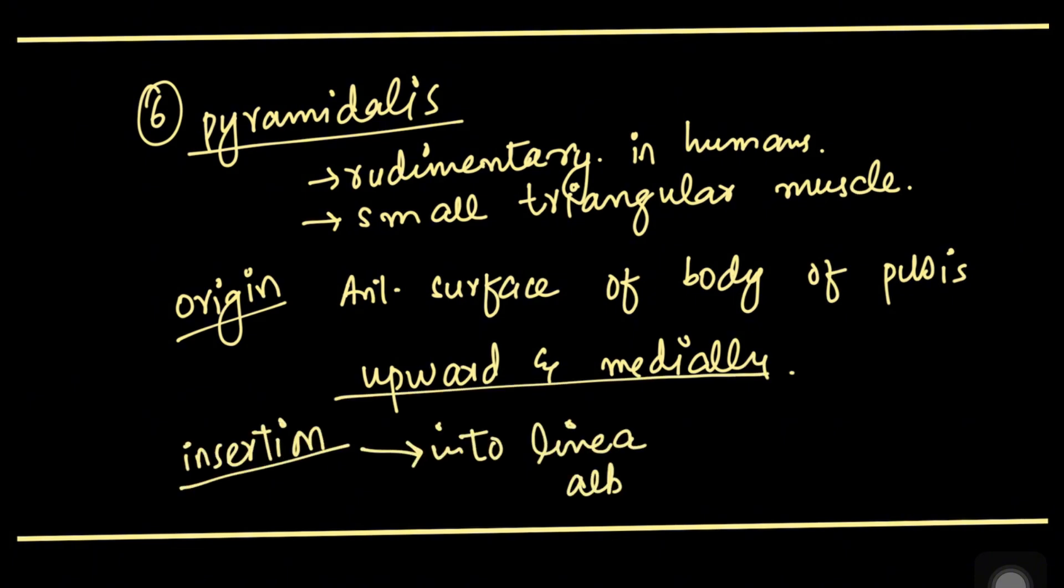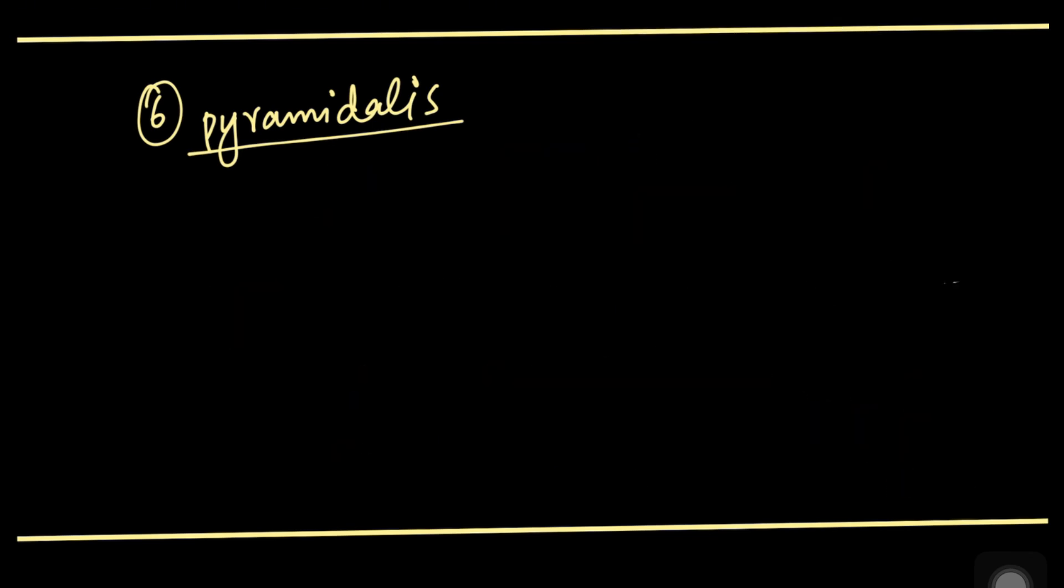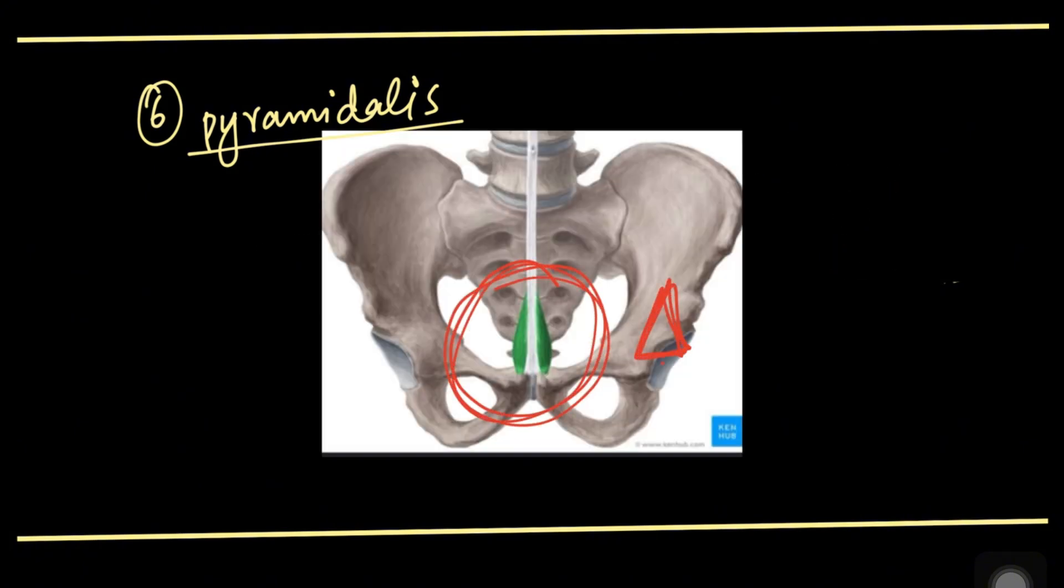Its action is to tense the linea alba. The nerve supply is the subcostal nerve T12. We can see it's like a triangle, the pyramidalis muscle.